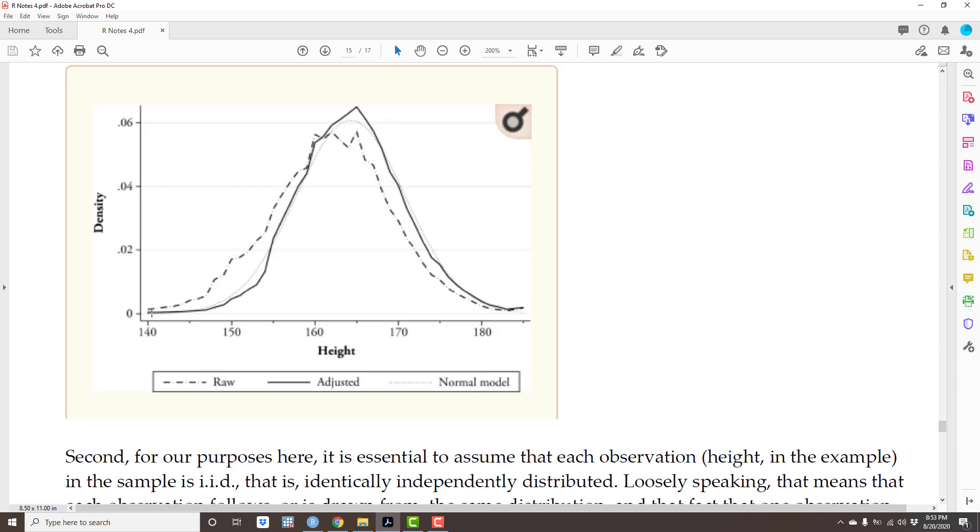What about a very short person? 1 meter 40 centimeters. Again, the density or the frequency is much smaller. So basically, the closer a height is to the mean, the more people you know that have that height. That's the idea.